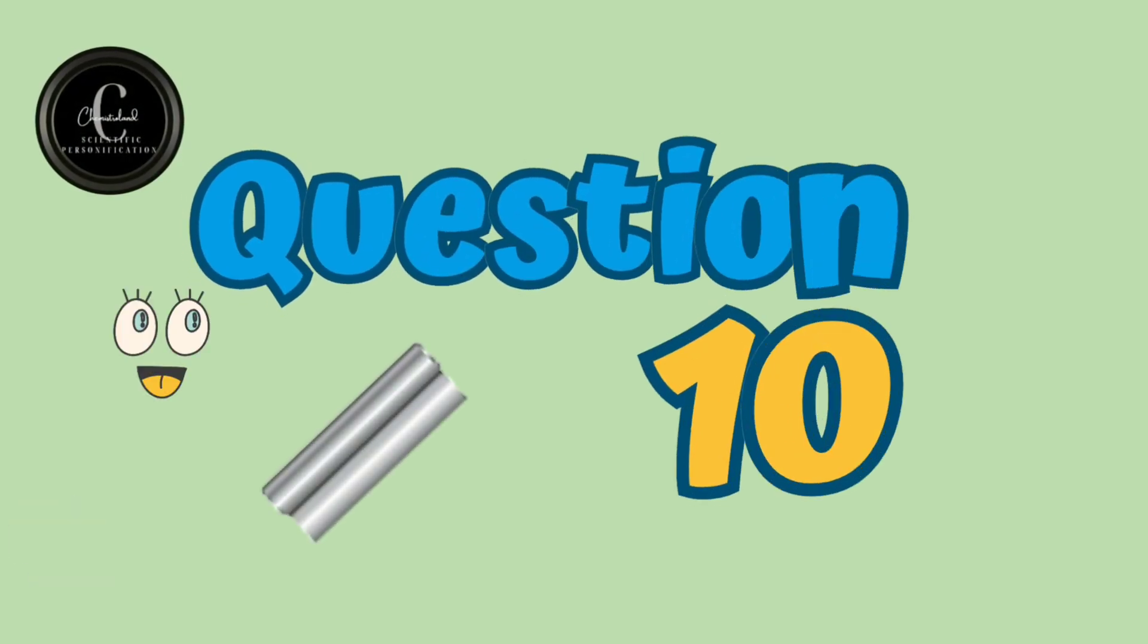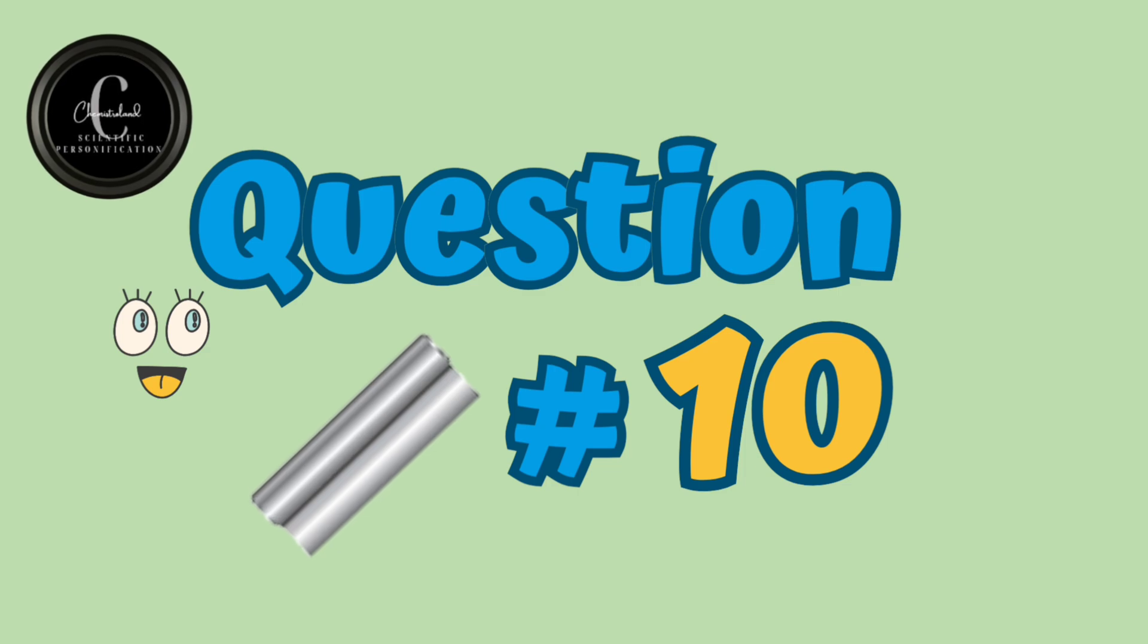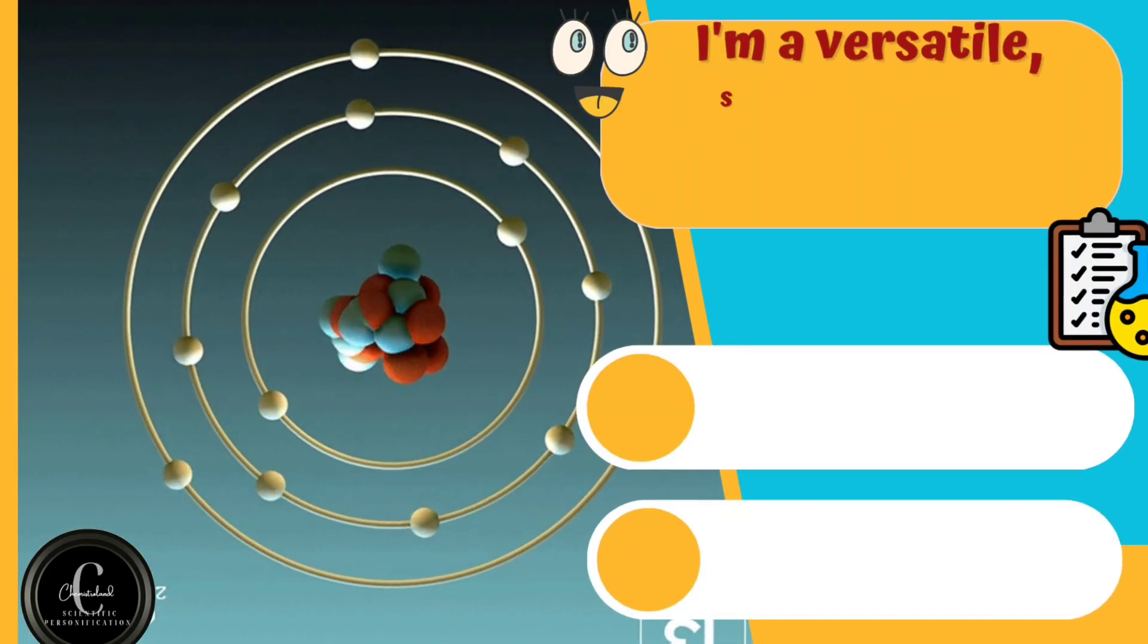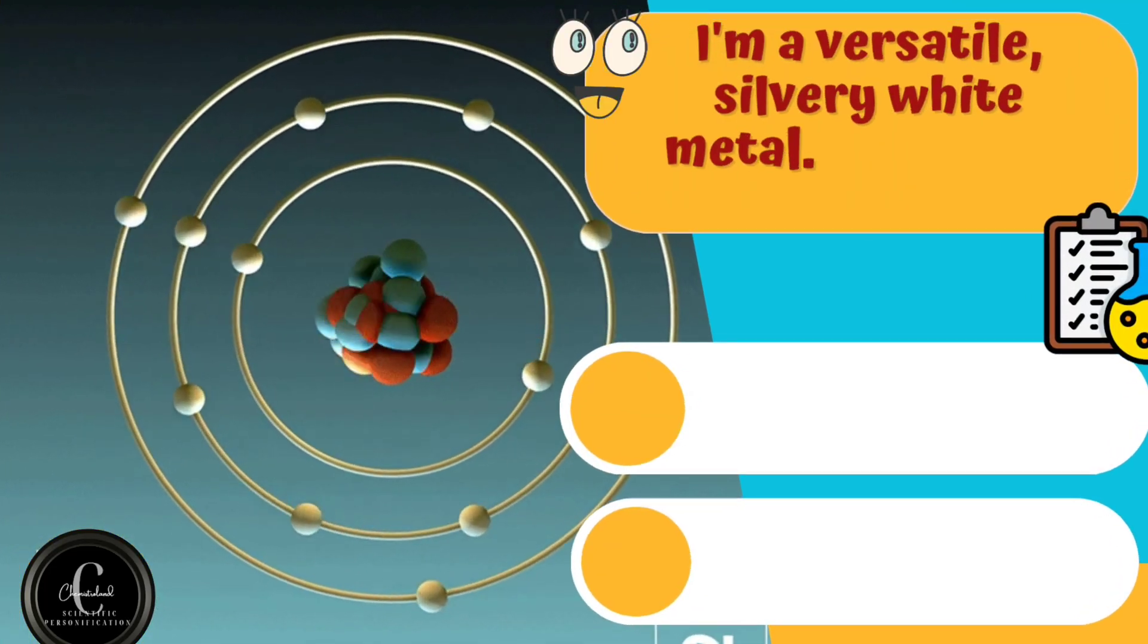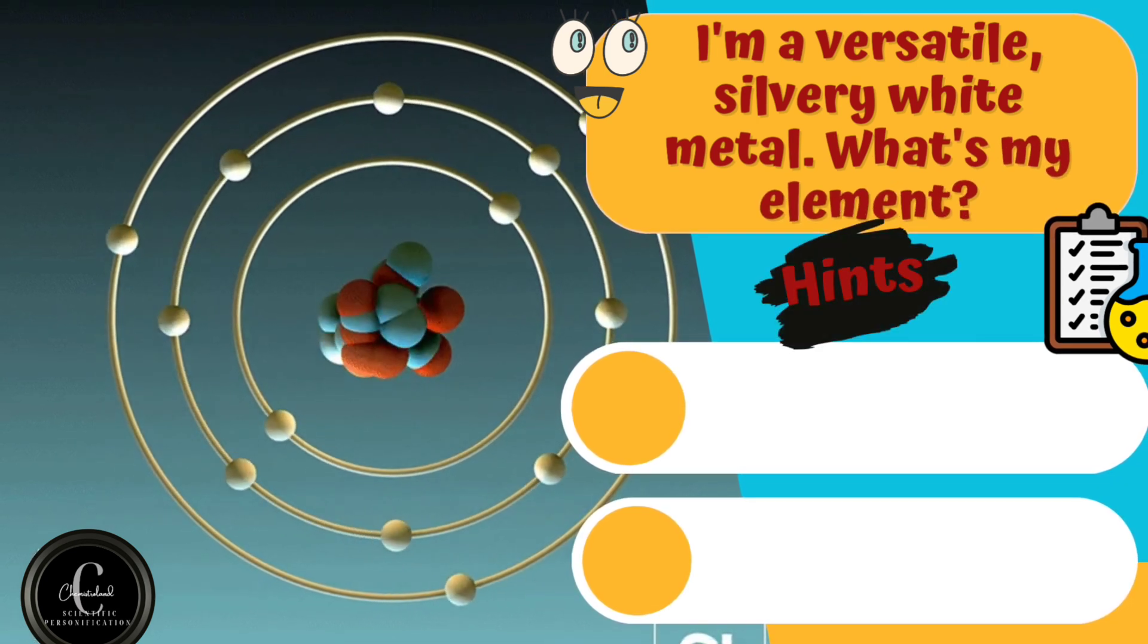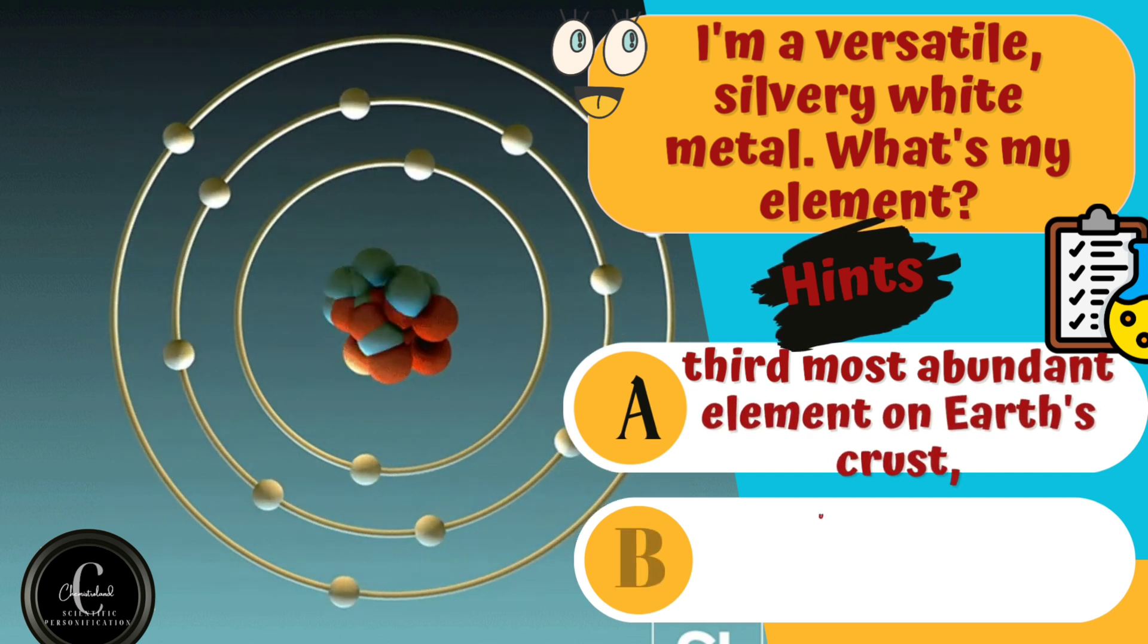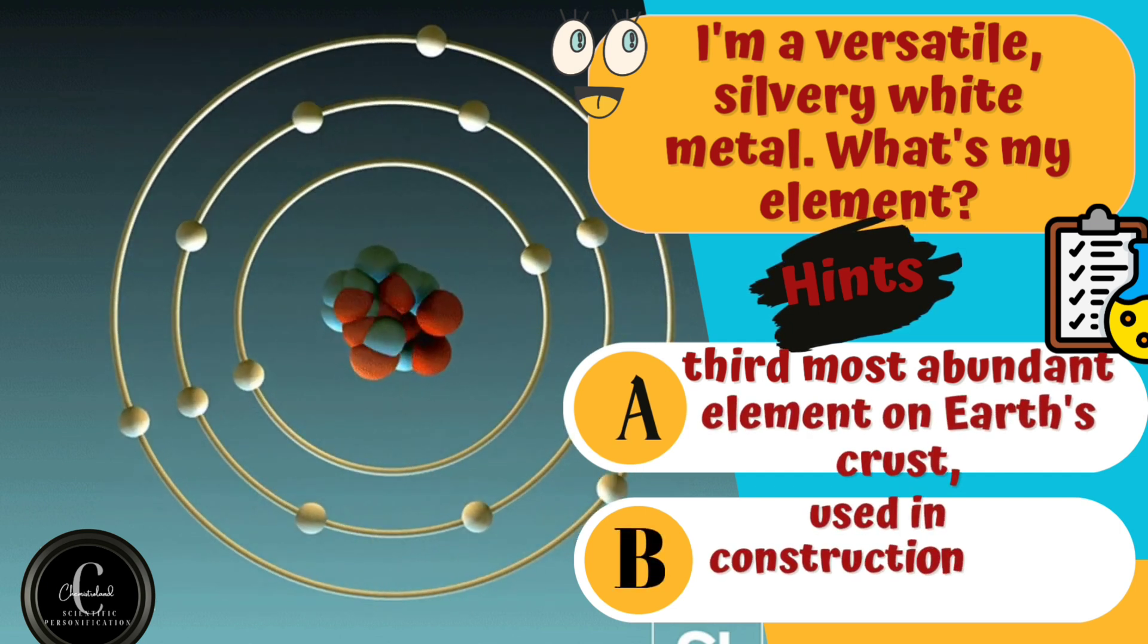Question number ten is about lightweight and corrosion resistant element of periodic table. I'm a versatile silvery white metal. What's my element? Hints are A. Third most abundant element on Earth's crust. B. Used in construction and packaging.